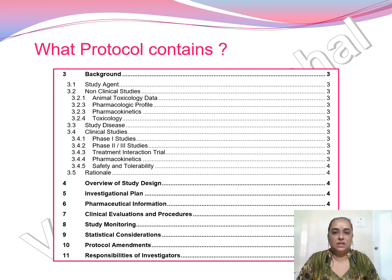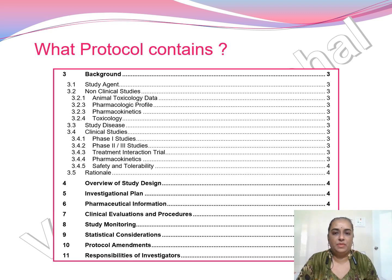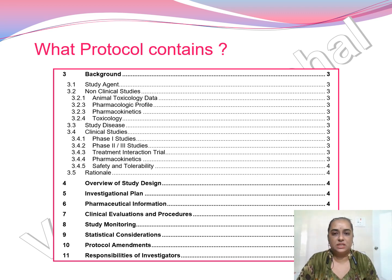The statistical considerations include statistical assumptions, sample size calculation, when the SAP will be released, and what the major primary and secondary endpoints are. In the protocol, you mention only the considerations — your assumptions, how you calculated sample size, whether assumed or sponsor-given — and only an outline of statistical methods and techniques. The full detail of statistical methods will be mentioned in the statistical analysis plan by the biostatistician.